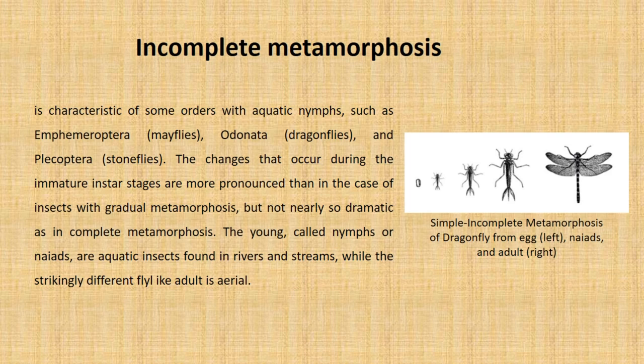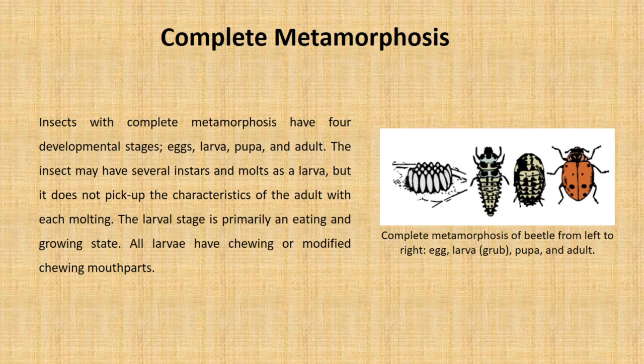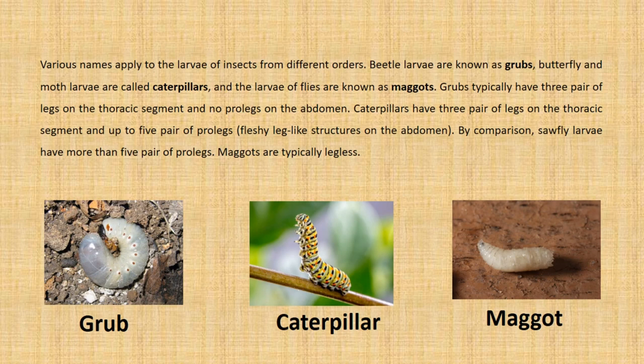Complete metamorphosis: insects with complete metamorphosis have four developmental stages — egg, larva, pupa, and adult. The insect may have several instars and molts as a larva, but it does not pick up the characteristics of the adult with each molting. The larval stage is primarily an eating and growing stage. All larvae have chewing or modified chewing mouthparts. Beetle larvae are known as grubs; butterfly and moth larvae are called caterpillars; and fly larvae are known as maggots. Grubs typically have three pairs of legs on the thoracic segment and no prolegs on the abdomen. Caterpillars have three pairs of legs on the thoracic segment and up to five pairs of prolegs — fleshy, leg-like structures on the abdomen. Sawfly larvae have more than five pairs of prolegs, and maggots are typically legless.